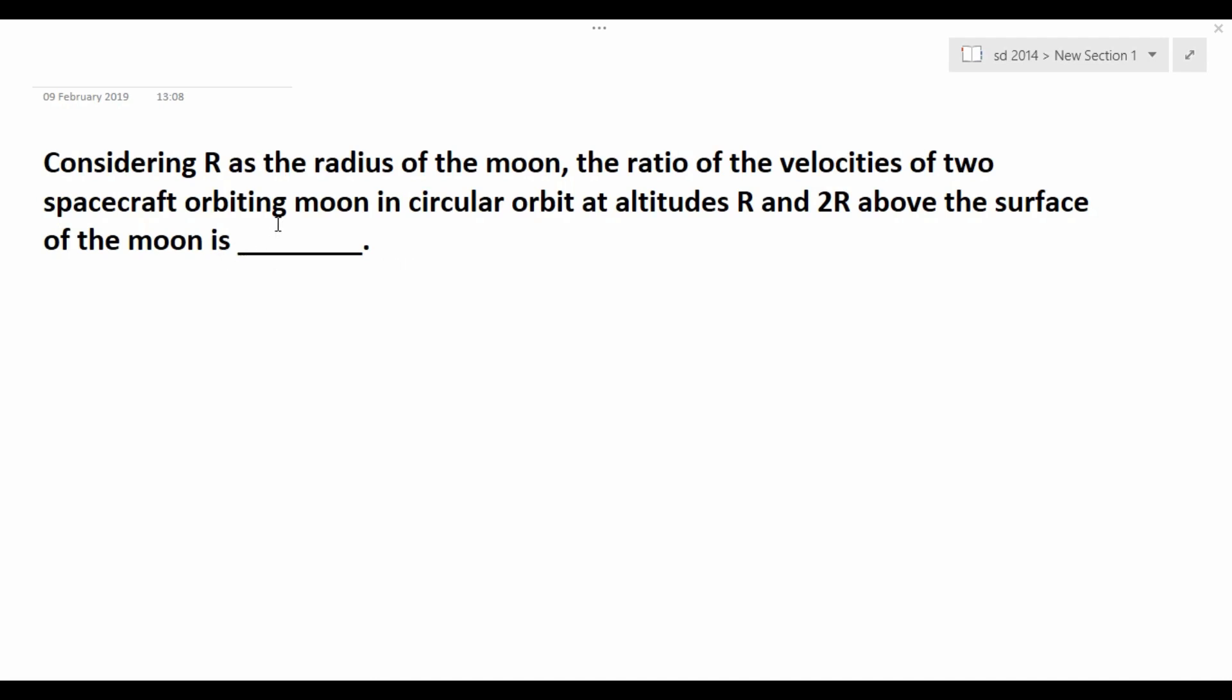Considering R as the radius of the moon, the ratio of the velocities of two spacecraft orbiting moon in circular orbit at altitudes R and 2R above the surface of the moon. This means we have to find out the orbital velocity ratio.